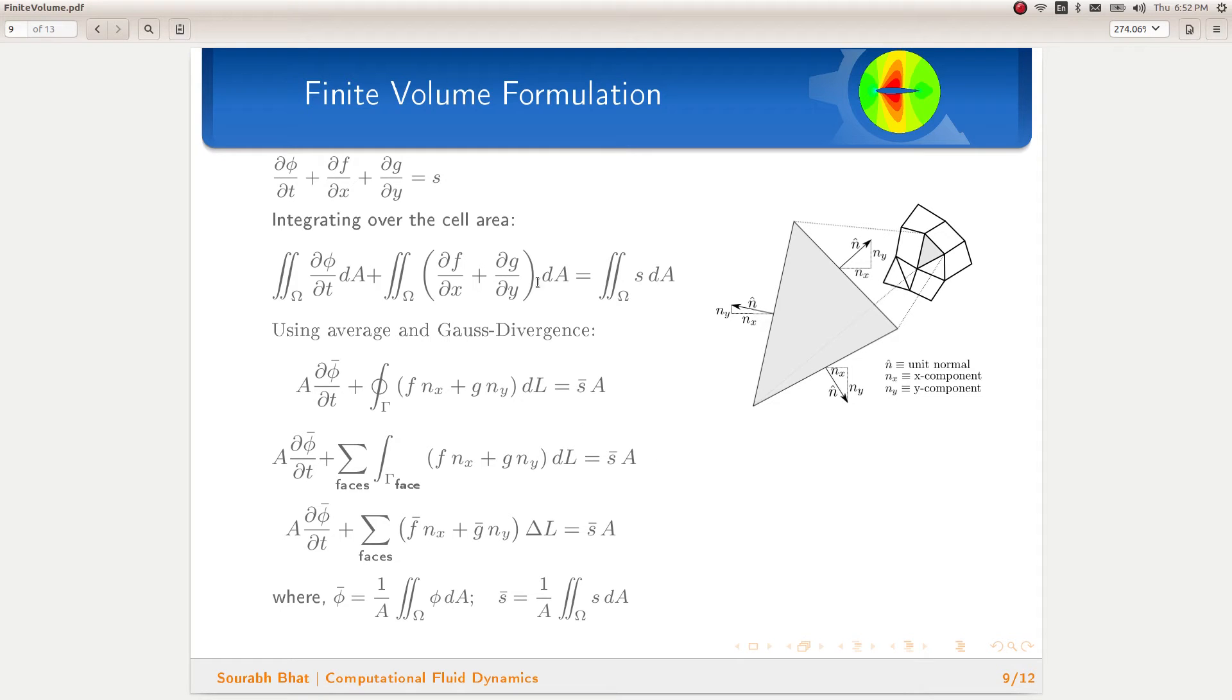To derive the finite volume formulation, let us consider this partial differential equation, which is a representative for a general governing equation. This unsteady, two-dimensional equation may represent the governing equation for fluid flows, magnetohydrodynamics, shallow water equations, or some other type of physical phenomena. Depending on the governing equation that you are planning to solve, this phi, f, g, and s can be scalars or vectors.